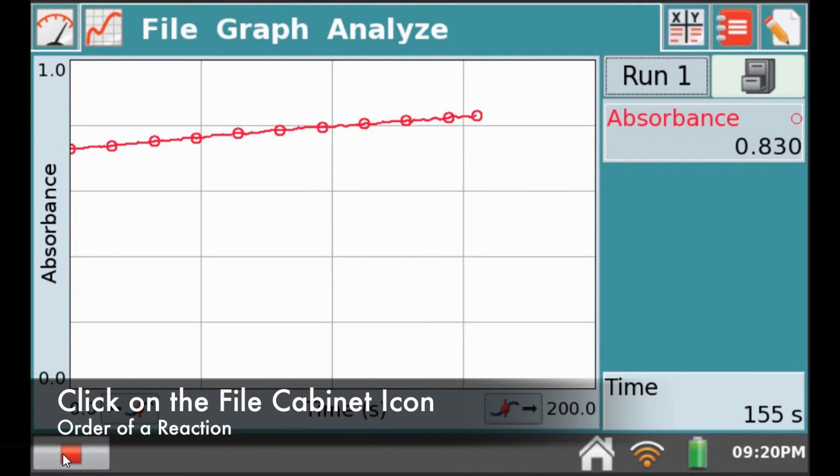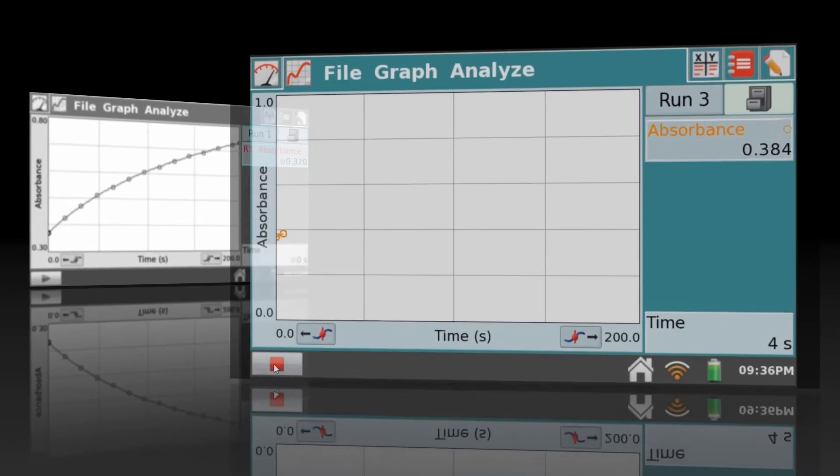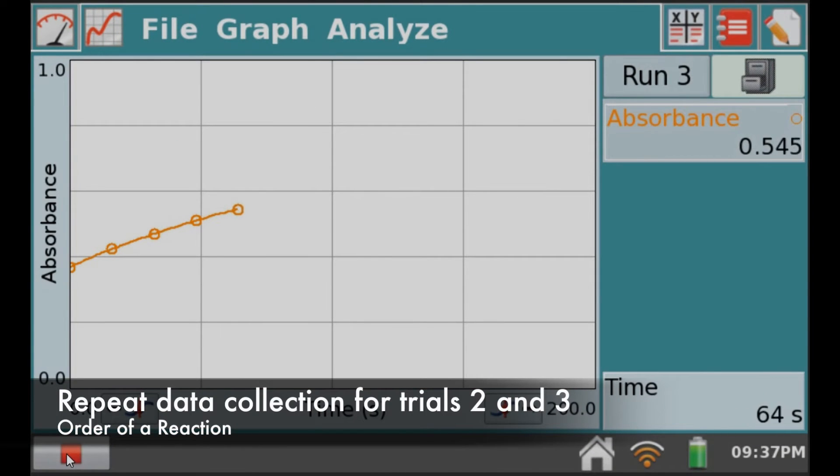To collect data from run 2, just click the file cabinet icon on the top right corner. Now repeat the experiment for the different runs.